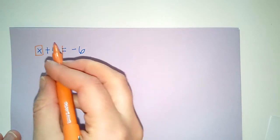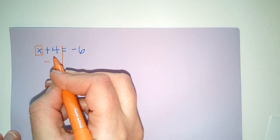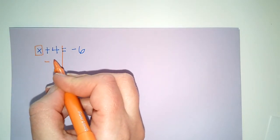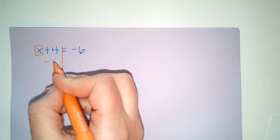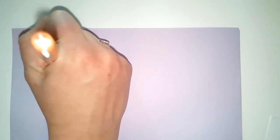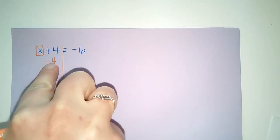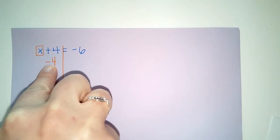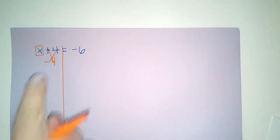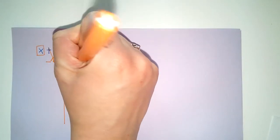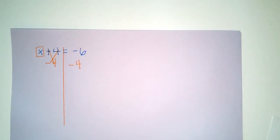If I have +4, and I want to get rid of that 4, I need to subtract 4. So I'm going to subtract 4 here because +4-4 gets me zero. But whatever I do to this side, I have to do this side, meaning I have to subtract 4 over here.